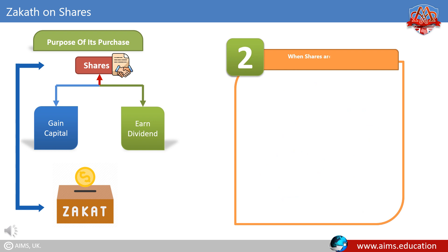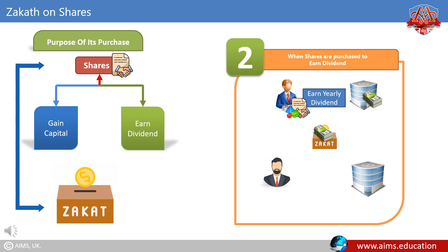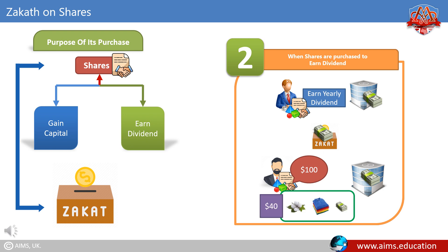When shares are purchased to earn dividends, Zakat is payable on that part of the market price which stands against those company assets on which Zakat is payable. For example, Ali purchases a share to earn the yearly dividend. The market price is $100. Out of that $100, $60 stands against assets such as buildings, office equipment, and machinery, and $40 stands against raw materials, finished products, and cash. Since only $40 stands against Zakat-payable assets, Ali will pay 2.5% Zakat on $40 only, and no Zakat is payable on the $60.